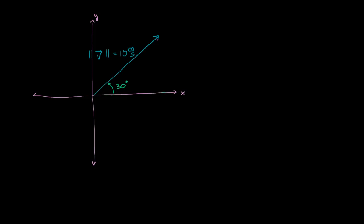Let's break down this vector right over here — I'm just assuming it's a velocity vector, vector v. Its magnitude is 10 meters per second, and it's pointed in a direction 30 degrees above the horizontal.